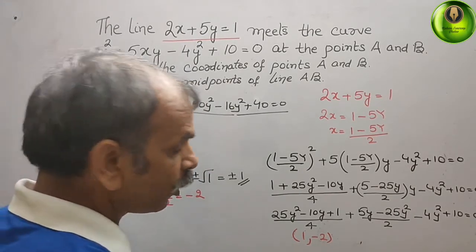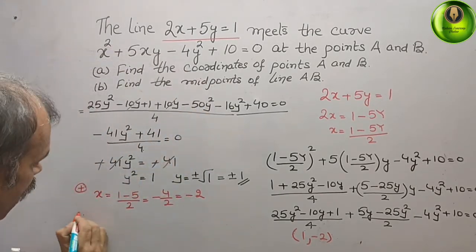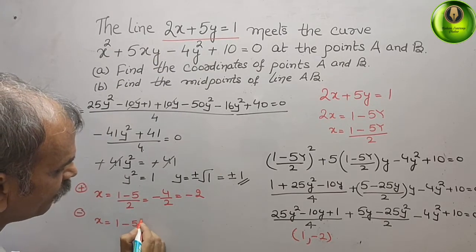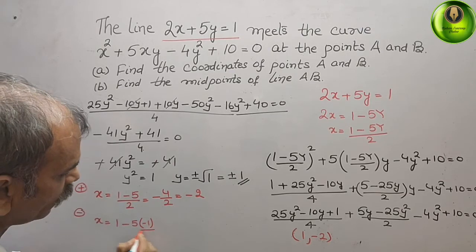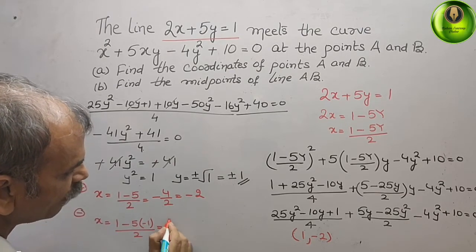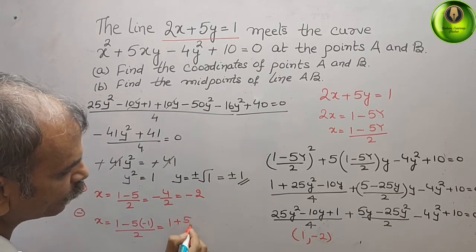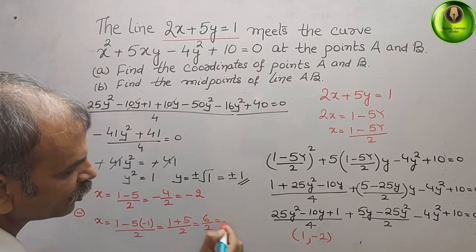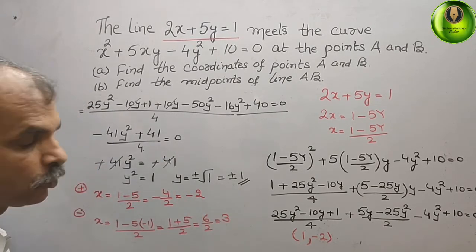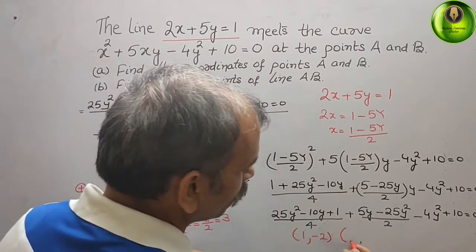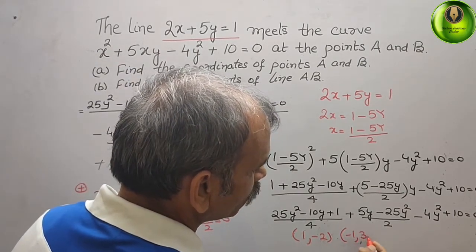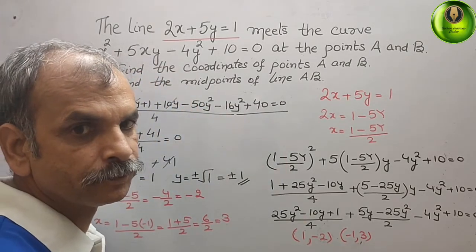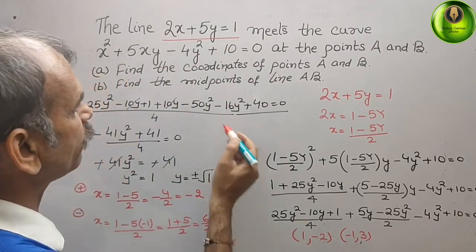Taking y = -1: x = (1 - 5×(-1)) / 2 = (1 + 5) / 2 = 6 / 2 = 3. So the second coordinate is (3, -1). These are the coordinates for points A and B.